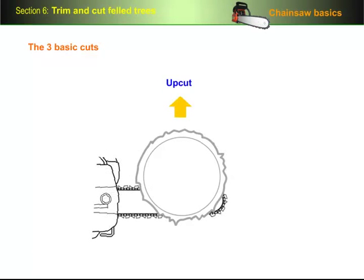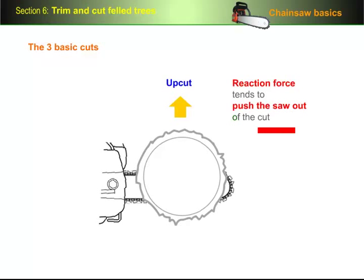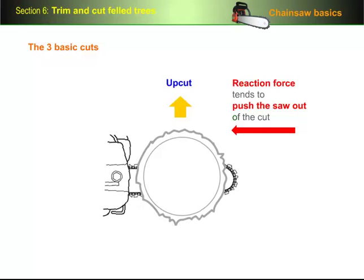The up cut uses the top of the bar. This time the reaction force tends to push the saw back out of the cut towards your body because the cutting part of the chain is moving in towards the log.